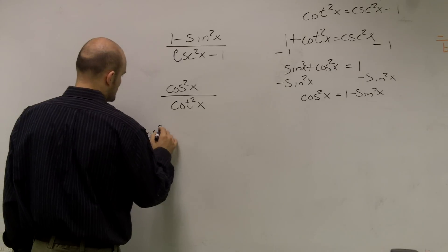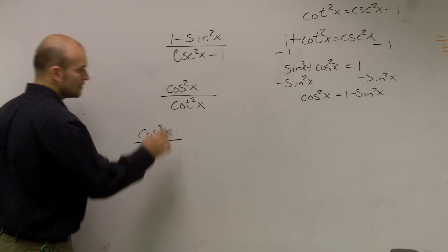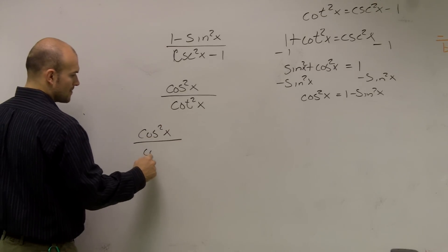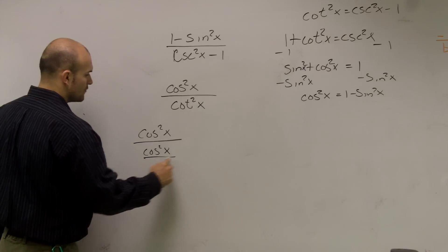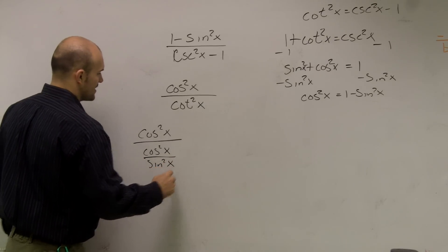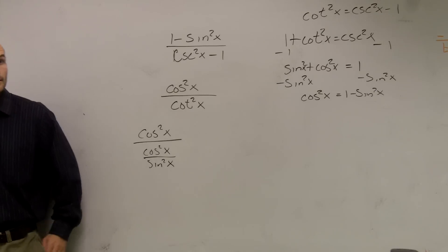So I'll write cosine squared of x all over, remember cotangent is cosine squared of x over sine squared of x, right? Yes.